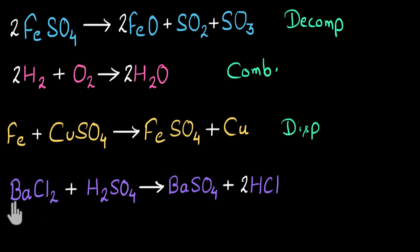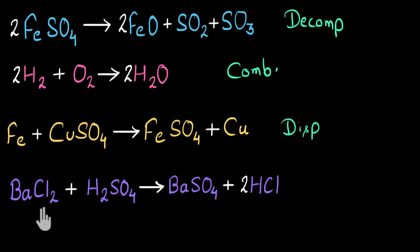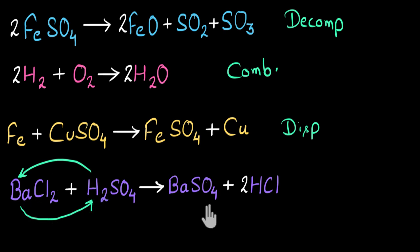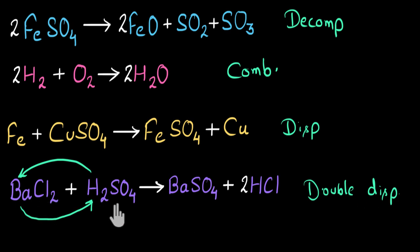Now the last reaction: barium chloride plus hydrogen sulfate gives barium sulfate plus hydrogen chloride. Barium was initially combined with chlorine, and hydrogen was initially with sulfate. But later barium switches places and combines with sulfate, while hydrogen switches places and combines with chlorine — forming barium sulfate and hydrogen chloride. The ions of the reactants are exchanging positions, and whenever that happens we call it a double displacement reaction. In a double displacement reaction, the ions of the reactants exchange places.